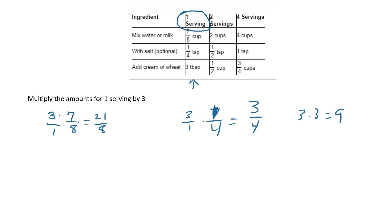You're probably going yeah, but that didn't really use fractions, which is true. So let's see what happens when I have something that I actually need fractions. And now it says find the average for the amounts for 2 and 4 servings.